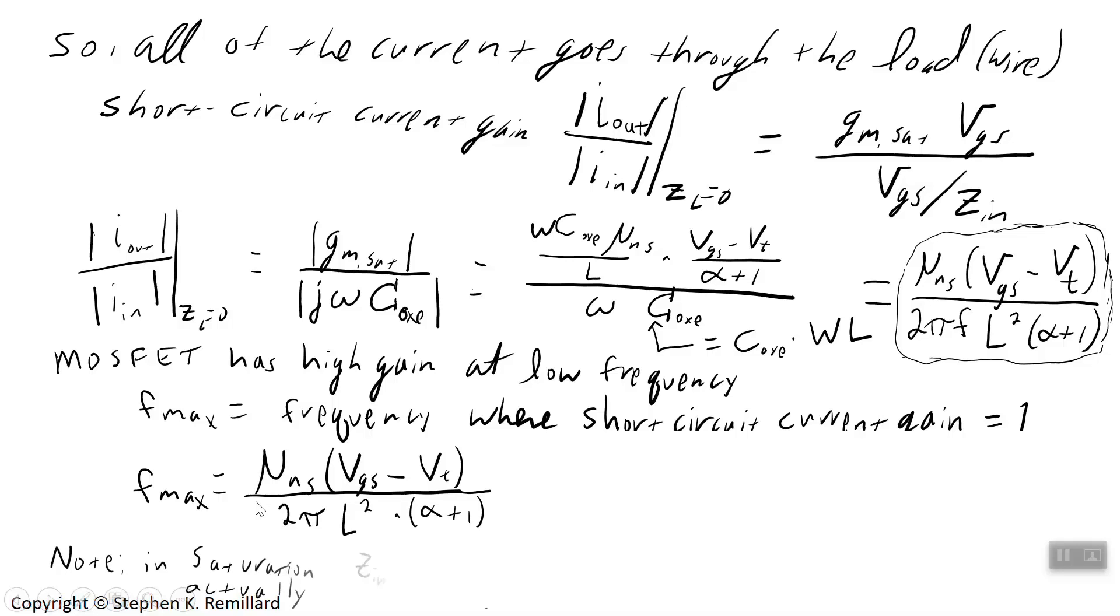When you're in saturation, the input impedance isn't quite minus J over omega C oxide, but it is about 3 halves minus J over omega C oxide. And the consequence of that actually is good. What it means is that the maximum operating frequency you calculate with this is a little on the low side. It will actually be 50% higher. But we're not going to go into that because we haven't gone into why that would show up, that 2 thirds.